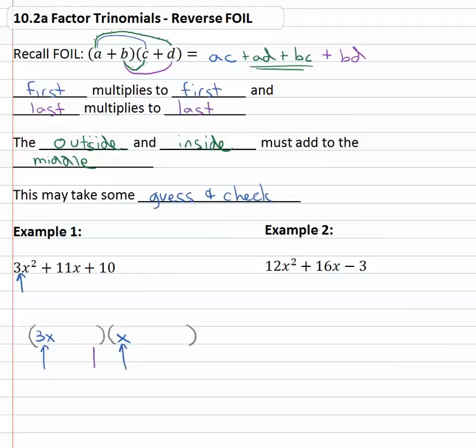Also, we know the last term times the last term has to equal the last term. What can we multiply together to end up with 10? Well, 5 times 2 equals 10. I'm going to clear out these arrows as I keep talking. And so now we've made the first times first equal the first, the last times the last equals the last. What we want to check to make sure happens is that the outside terms and the inside terms are going to add to the middle.